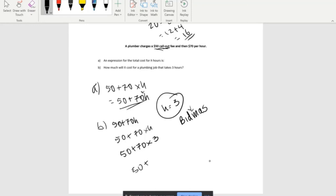50 plus 70 times 3, which we know is 210. So 50 plus 210 gives us our final answer of 260.